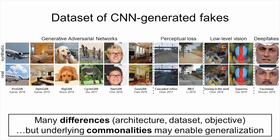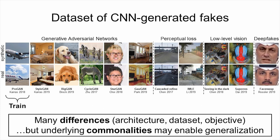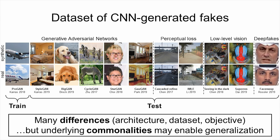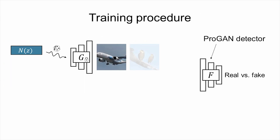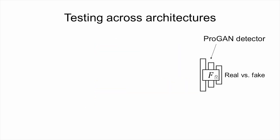To study this, we need a good way to evaluate generalization. Ideally, we would train a detector on all available CNN-synthesized images and see how it generalizes to future methods. However, since we don't have future models, we instead intentionally restrict our training set by training on only one network and seeing how well it generalizes to all others. We choose the ProGAN method to train on, and train a standard ResNet classifier on real and fake images from ProGAN respectively. Unlike a GAN setup, we freeze the generator and train the classifier to convergence.